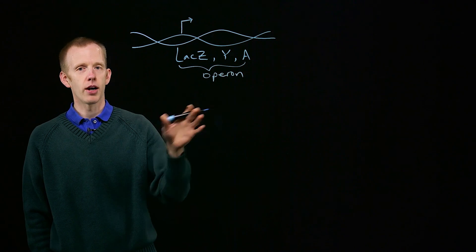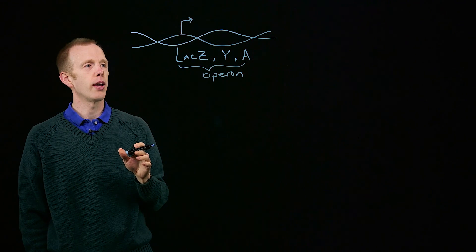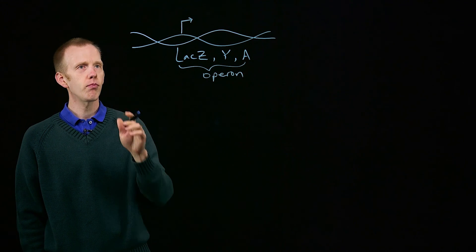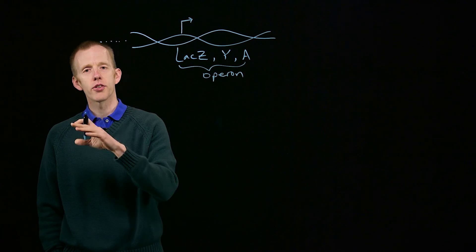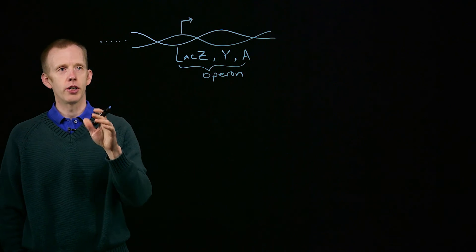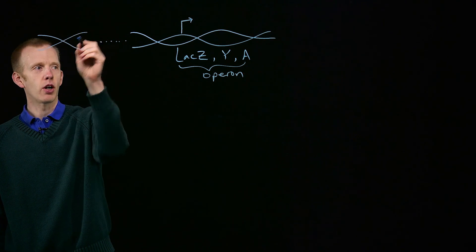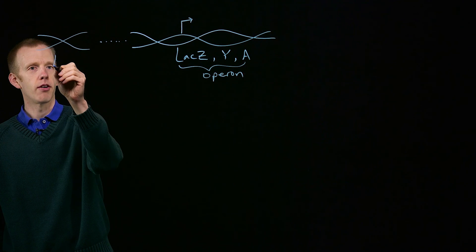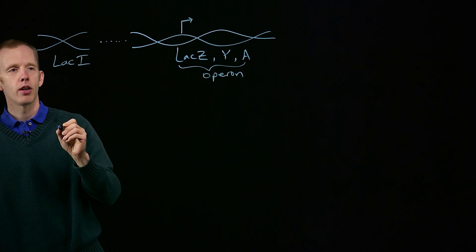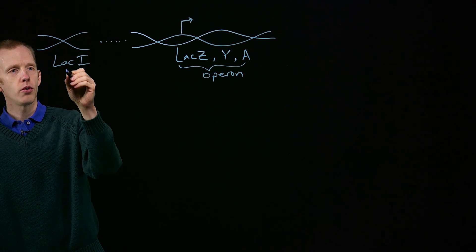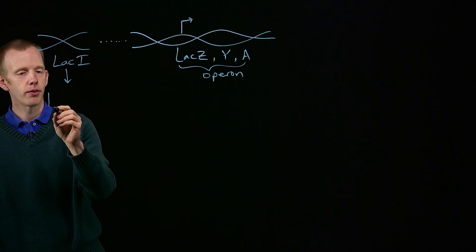This process of co-transcription doesn't happen in eukaryotes, by the way. Upstream, somewhere else in the bacterial genome, there's a part of the chromosome that encodes a fourth lac gene, lacI, which encodes a protein called lac repressor.